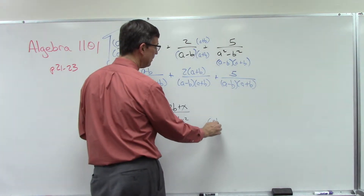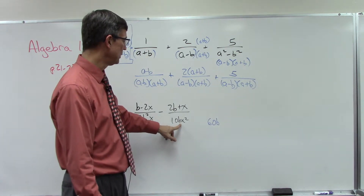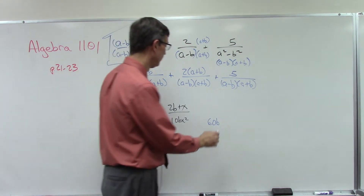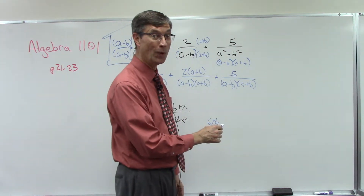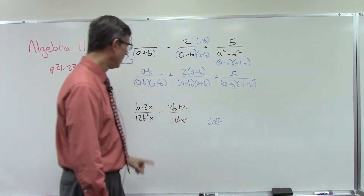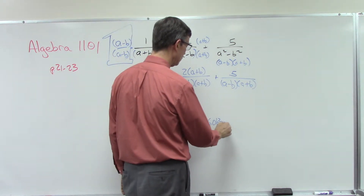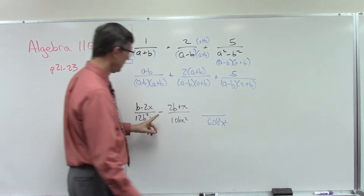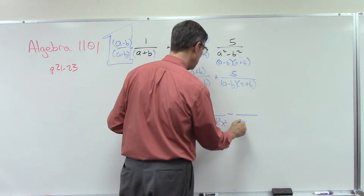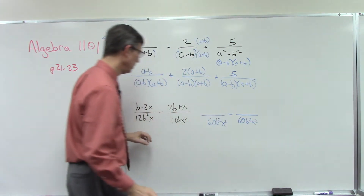What's the most number of times that b is used? It's used twice here and once here. So I need to use it twice — don't add them. What's the most number of times x is used? Twice. So the common denominator is 60b²x². We'll keep the minus sign in between and keep the same denominator: 60b²x².